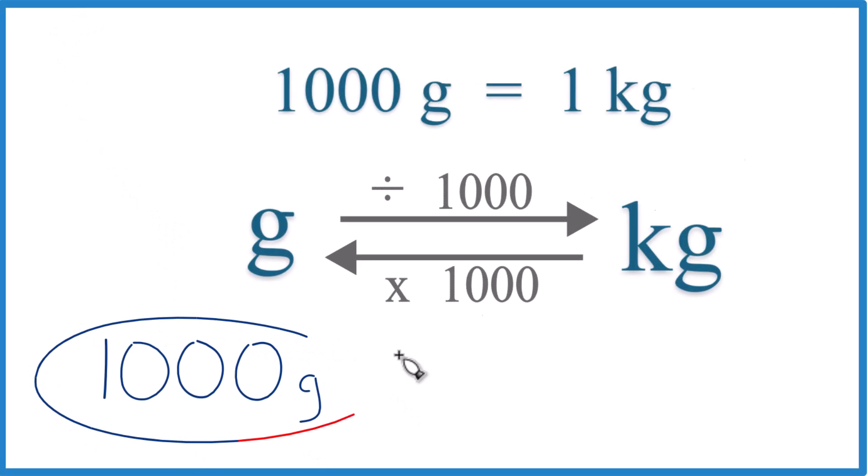So if you have a thousand grams and you want to convert that to kilograms, you need a conversion factor. In this case, the conversion factor is that a thousand grams equals one kilogram.